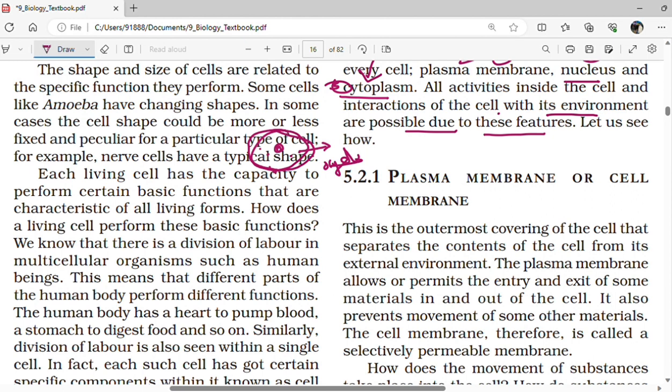The cell contains mainly three parts: plasma membrane, cytoplasm and nucleus. Cytoplasm is a jelly-like substance which is present outside the nucleus and inside the plasma membrane.